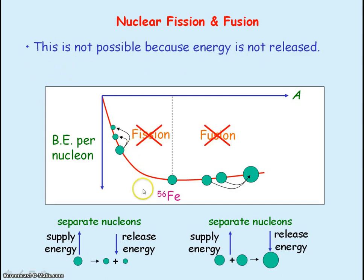If fission was to occur before iron 56 and fusion was to occur after iron 56 then you would see that the binding energy of the products would be less than the binding energy of the reactants and as a result energy would not be released from these processes and so these processes would not be possible.